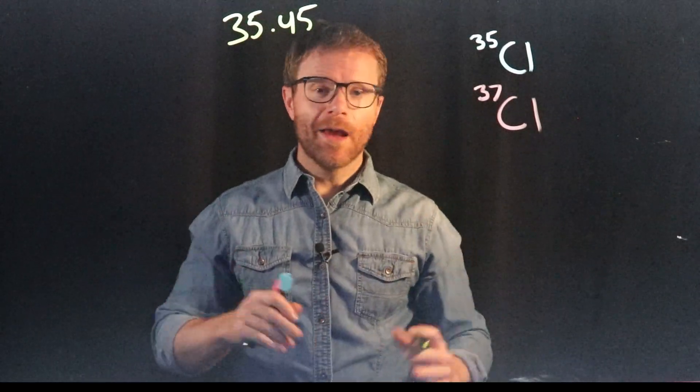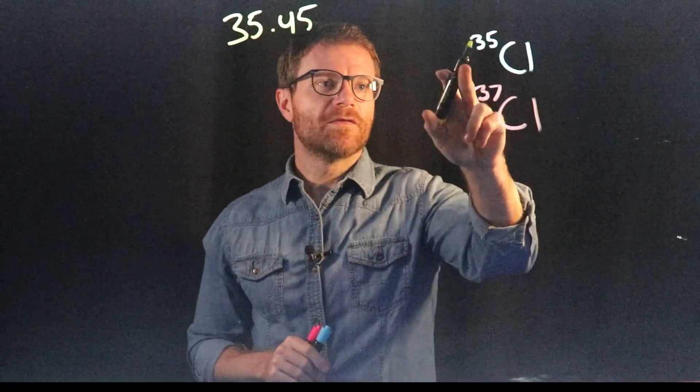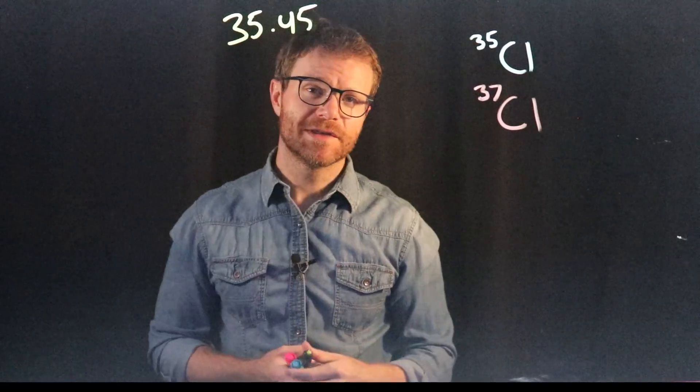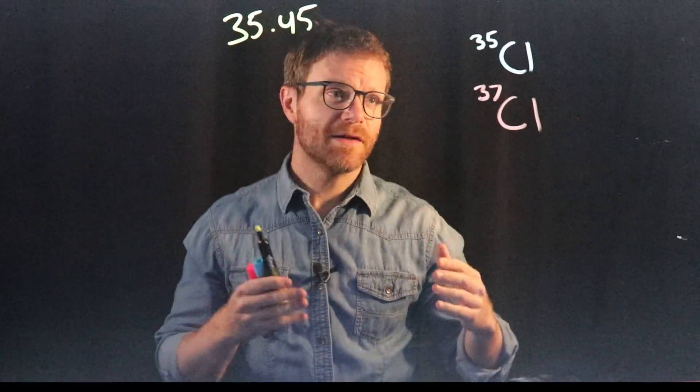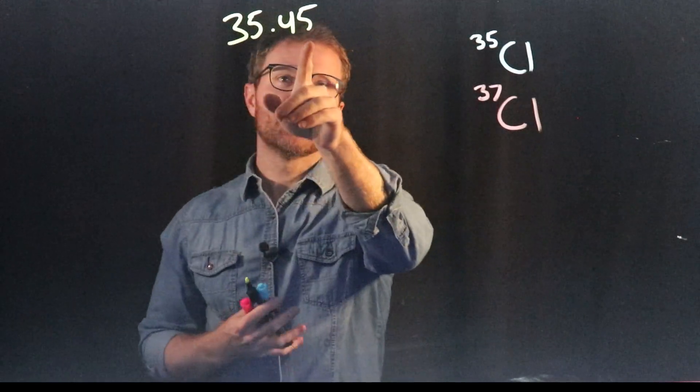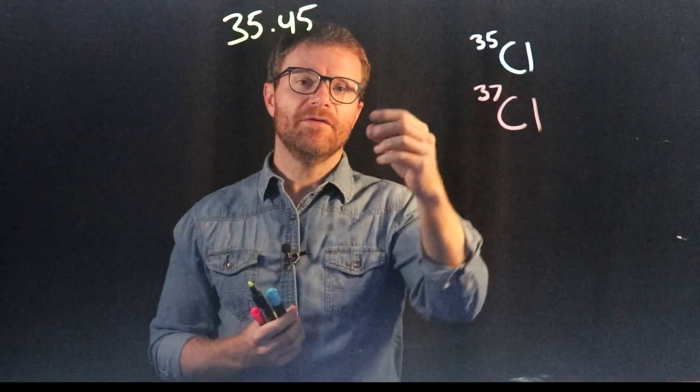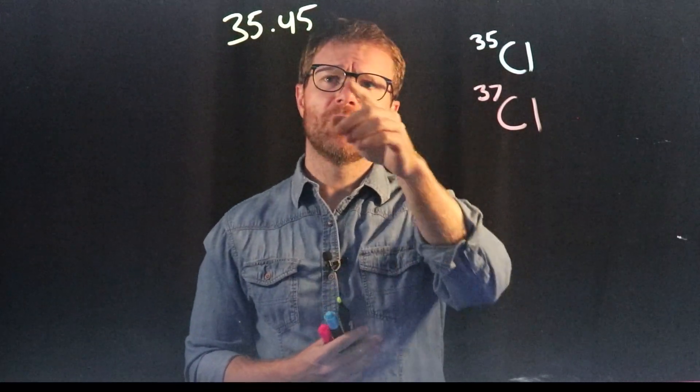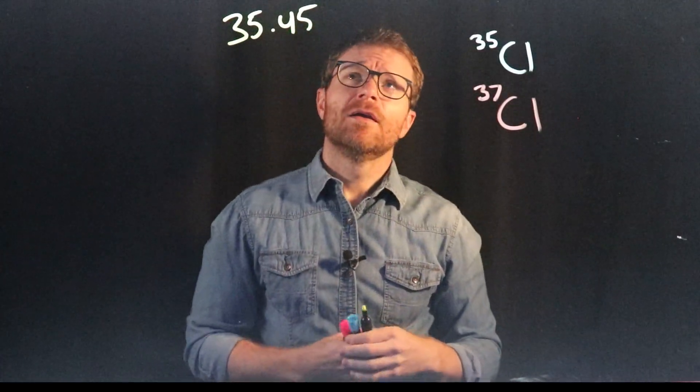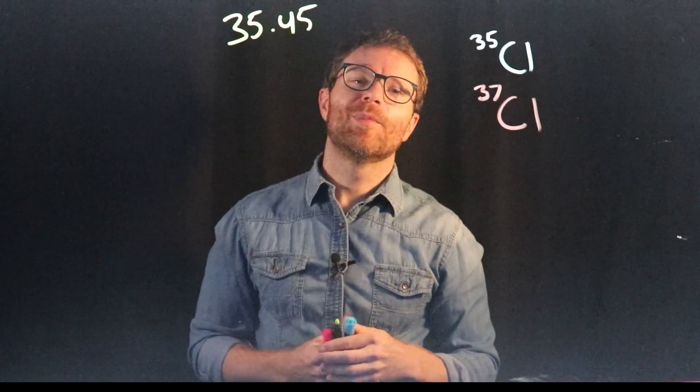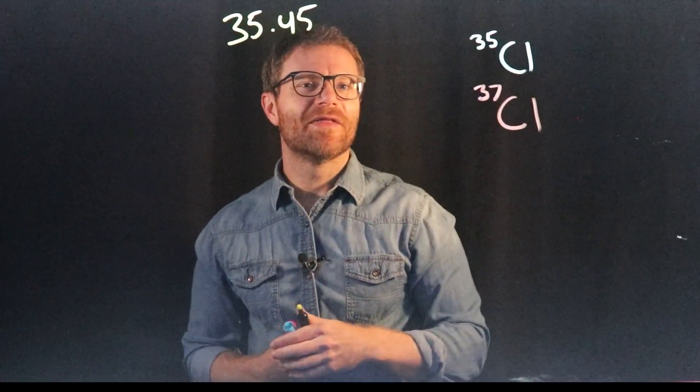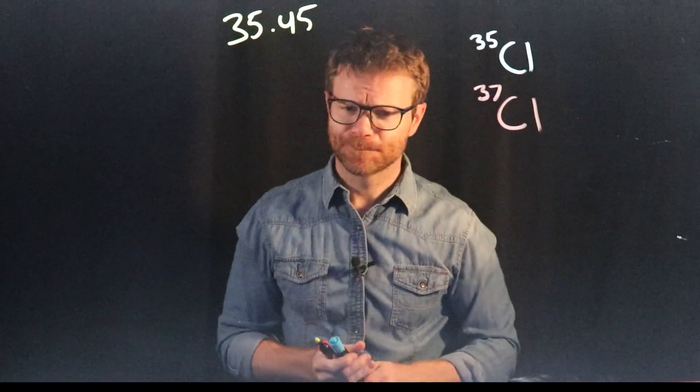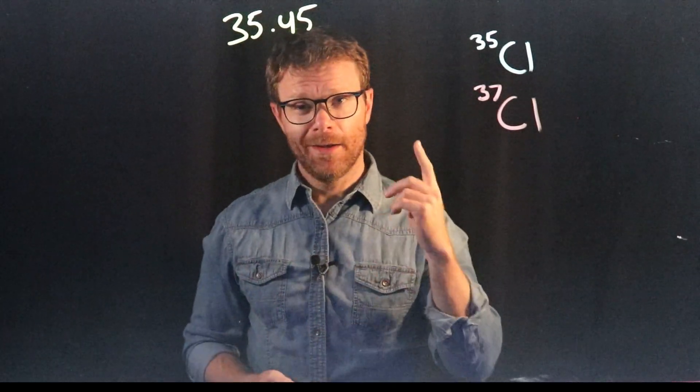Now once again, before we do any math, which one of these two atomic masses do you think is more common in nature? Chlorine 35 isotope or chlorine 37 isotope? The right answer is chlorine 35 because 35.45 as a number is much closer to 35. It's only 0.45 away than it is to 37. It's 1.55 away from 37. So I can kind of look at that math right there actually and compare those two and see that this probably is about 75% and this is about 25%. But that's a little bit advanced math that I'm just doing in my head. We don't have to do that because we have algebra.